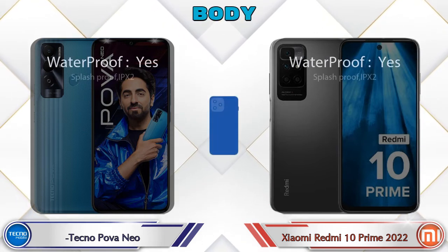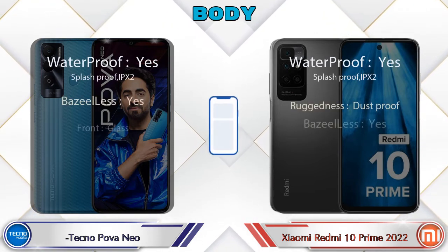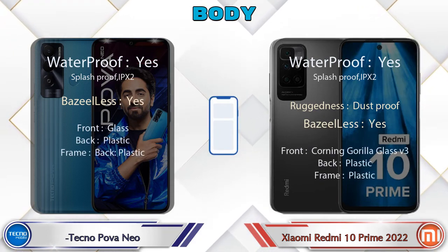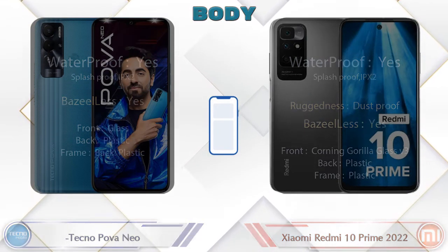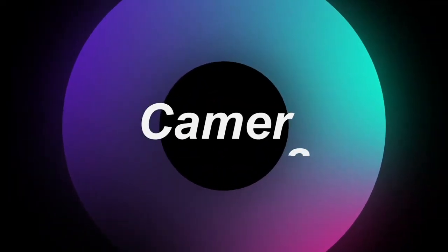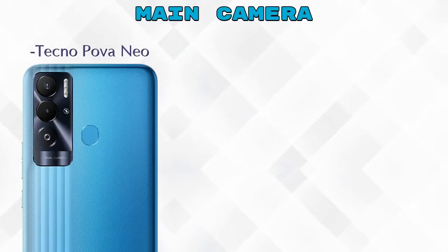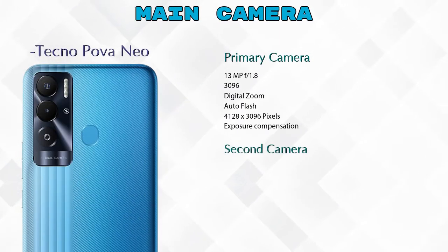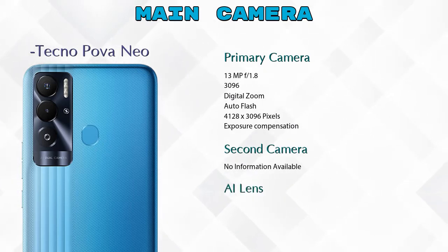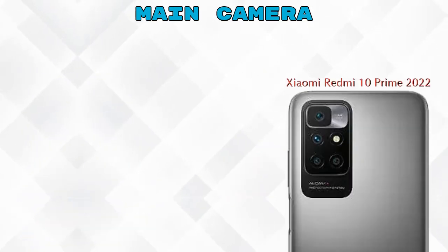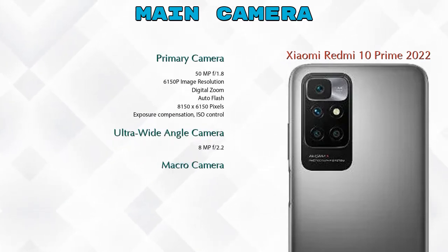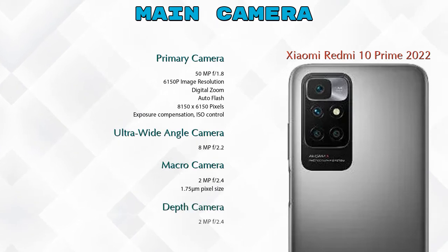Let's see the complete details about the body of both phones. Now let's see the details about our favorite feature: camera. First, talking about the rear camera — we can see three cameras in Pova Neo: primary camera, second camera, and AI lens. In Redmi 10 Prime 2022 we can see four cameras: primary camera, ultra-wide angle camera, macro camera, and depth camera.